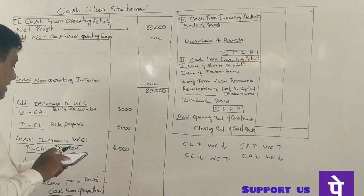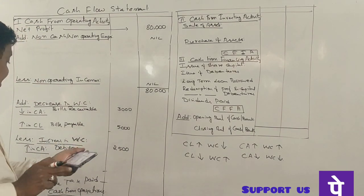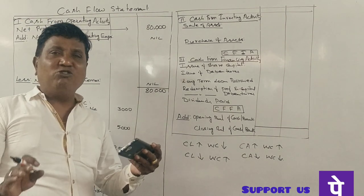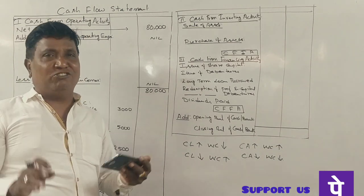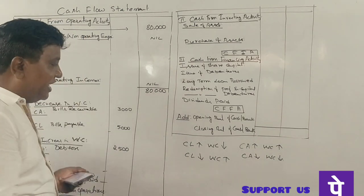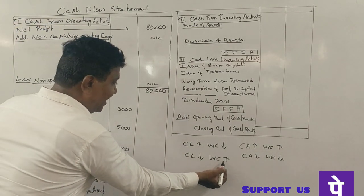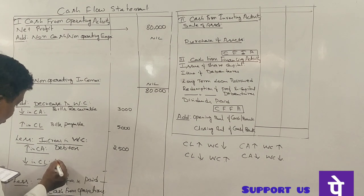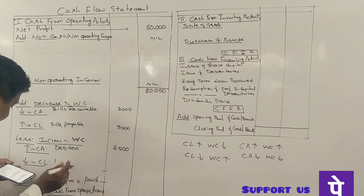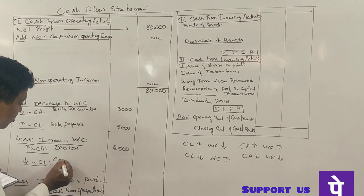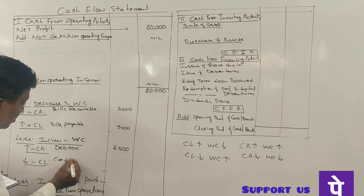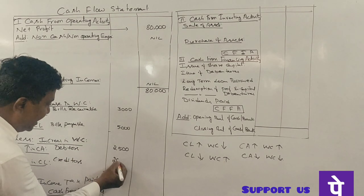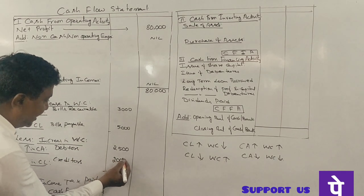Bills payable and credit tax: 9,000 in the previous year, 7,000 in the current year. Current liability decreased by 2,000 rupees. When current liability decreases, working capital increases by 2,000 rupees. Working capital increase means deduction from cash from operations.